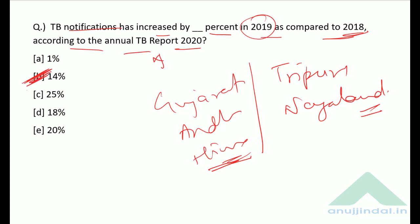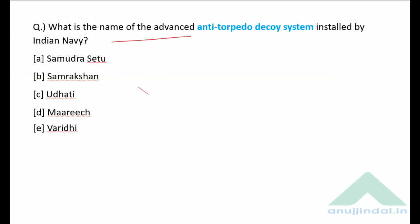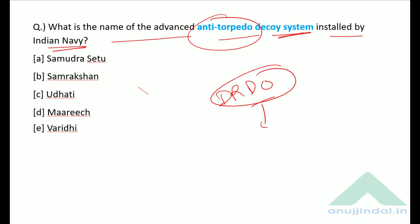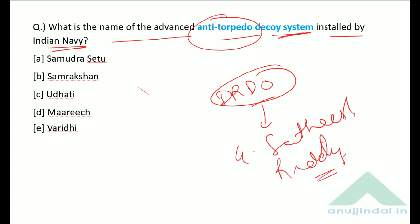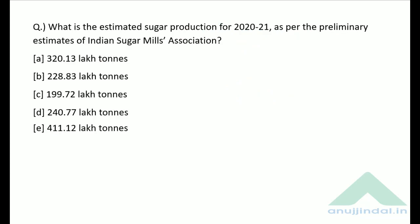What is the name of the advanced anti-torpedo decoy system installed by the Indian Navy? This system was designed and developed by DRDO, headed by Mr. G. Satheesh Reddy. The name of the system is MAAREECH — option D is the correct answer.